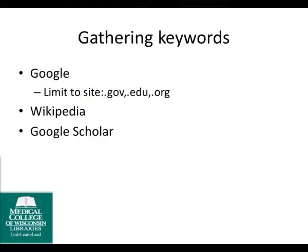The next step in the search process is to gather keywords for each concept. When I start gathering keywords, I often start out on the internet with Google. If the results on the first page are not helpful, there are ways to limit the results in Google to find more scholarly information. For instance, you can limit to websites that end in .gov, which is a government website, .edu, which indicates a school or university website, or .org, which is the domain for organizations.